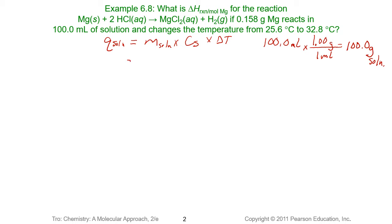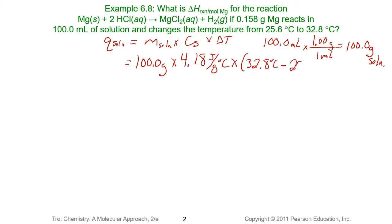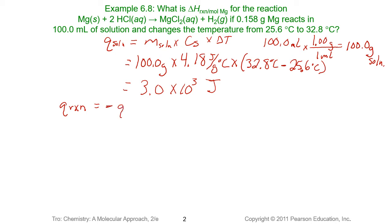Now we can calculate the heat of our solution: 100 grams, and since we are not given a specific heat we assume it is that of water, times our change in temperature. Our final temperature was 32.8 degrees Celsius and the initial temperature was 25.6 degrees Celsius. The heat of our solution is 3.0 × 10³ joules. Our final temperature was higher than our initial, so we get a positive value — the solution is absorbing heat. The heat of the reaction is the opposite of the heat of the solution.